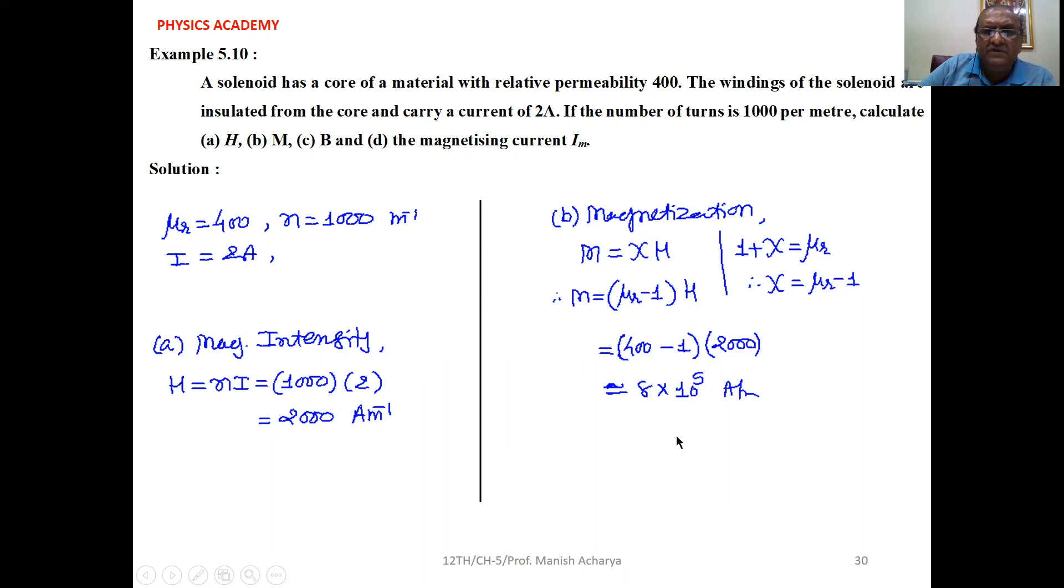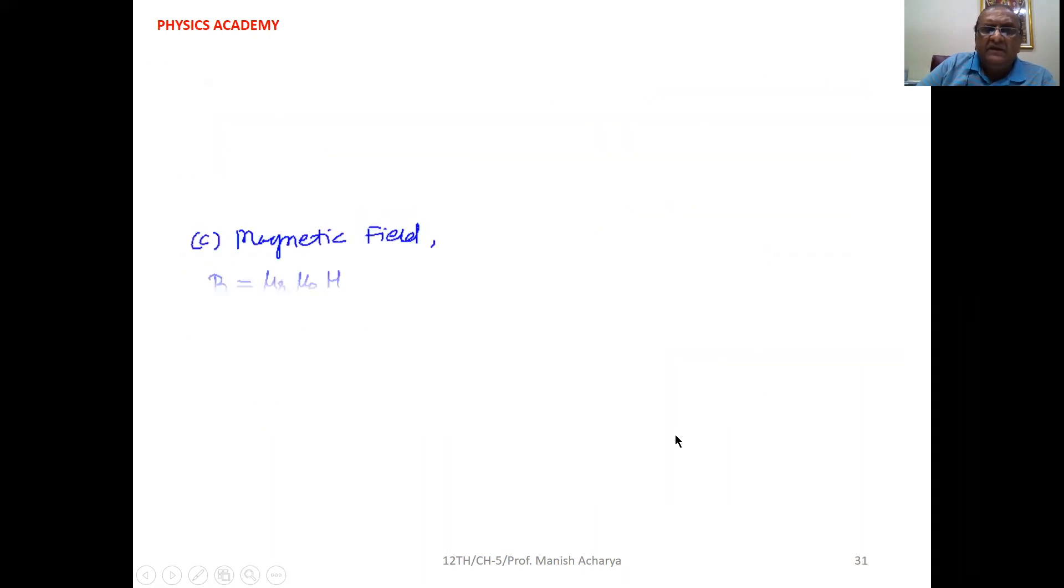Then the magnetic field, the resultant magnetic field B, is μ_R μ_0 H. μ_R is 400, μ_0 is 4π into 10 raise to minus 7, and H is 2000. When you solve this, your answer will be 1 tesla.